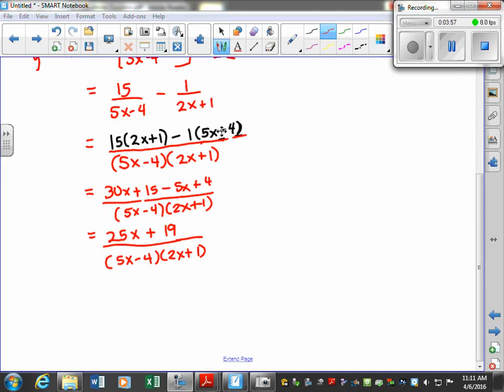And careful right here. I accidentally put a plus there, so I fixed it. Now when I distribute that out, 15 times 2 is 30, 15 times 1 is 15. Simplify the numerator, add like terms, and this is what we get.